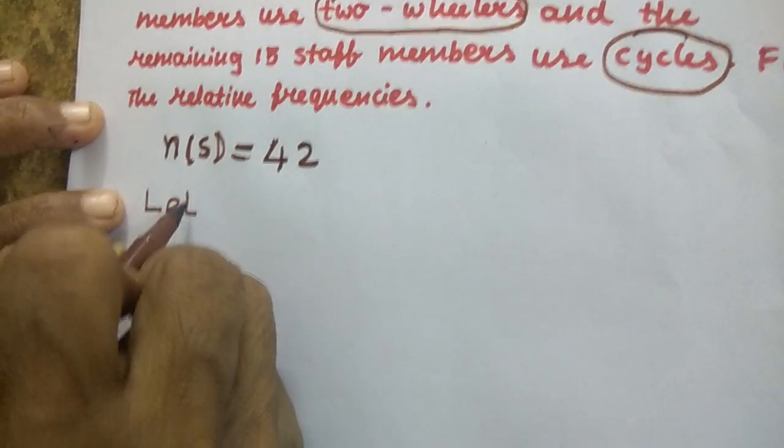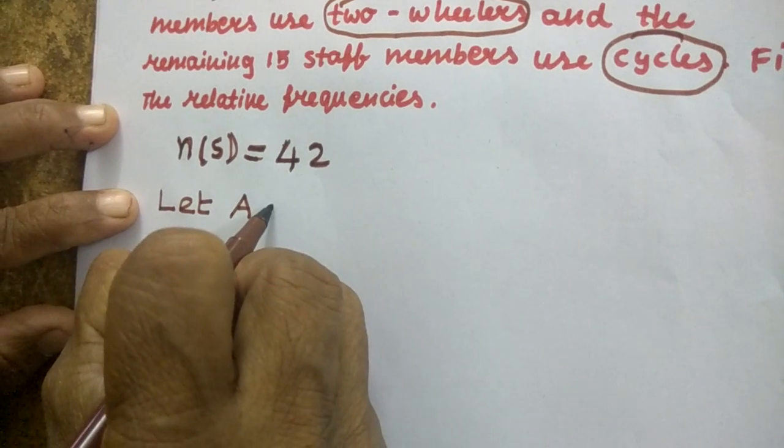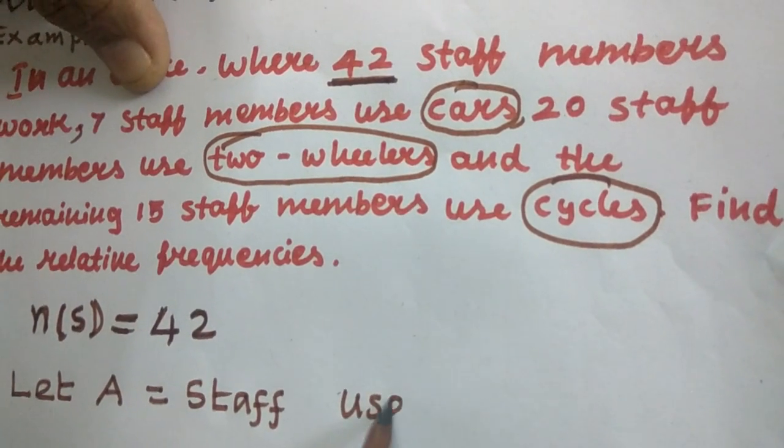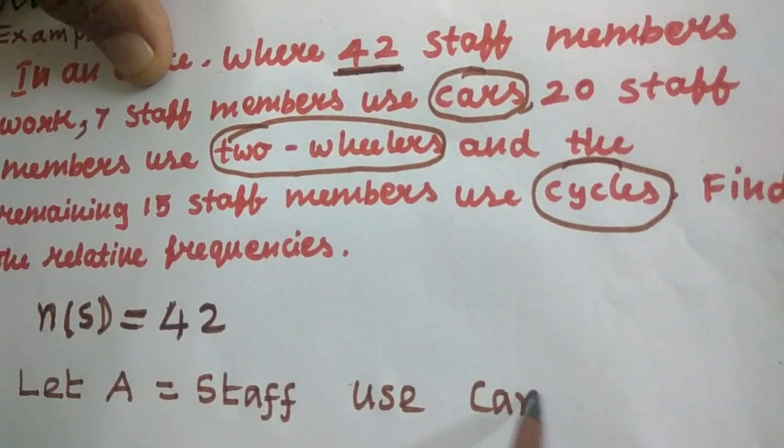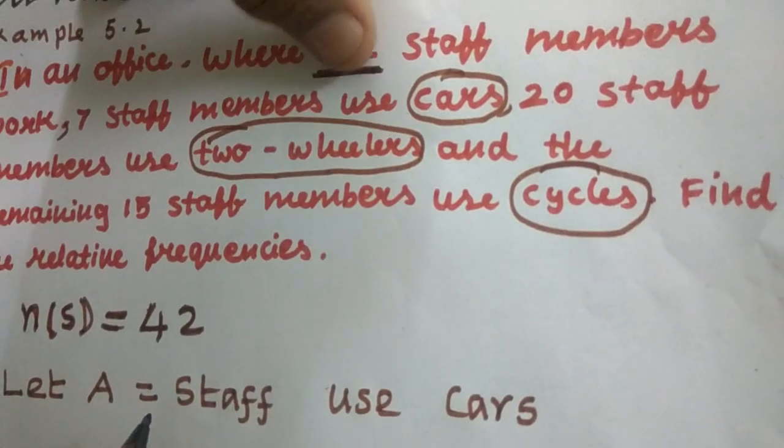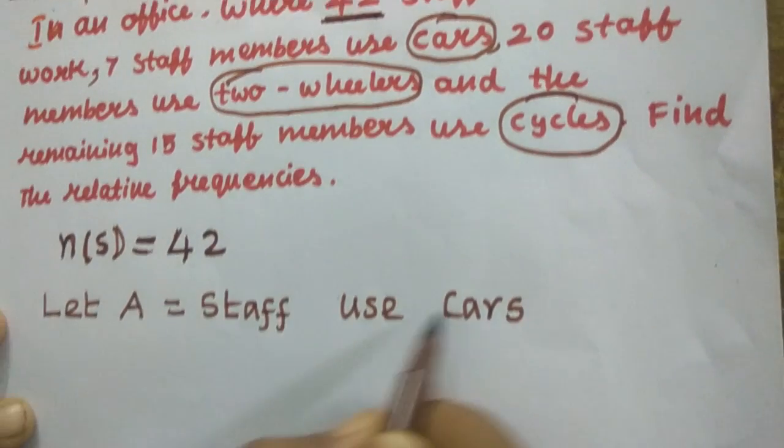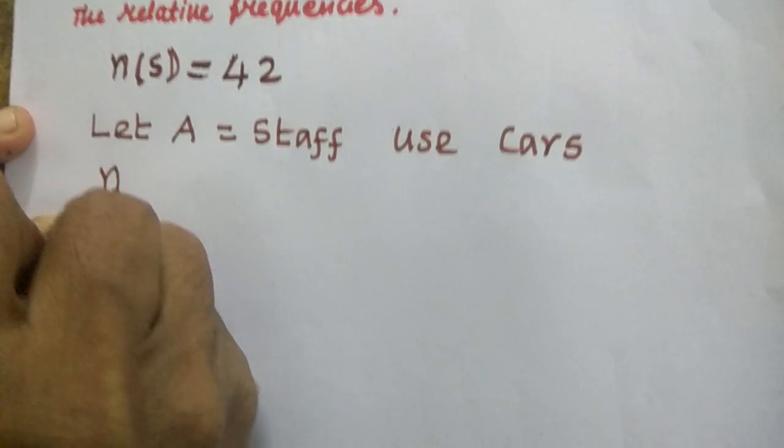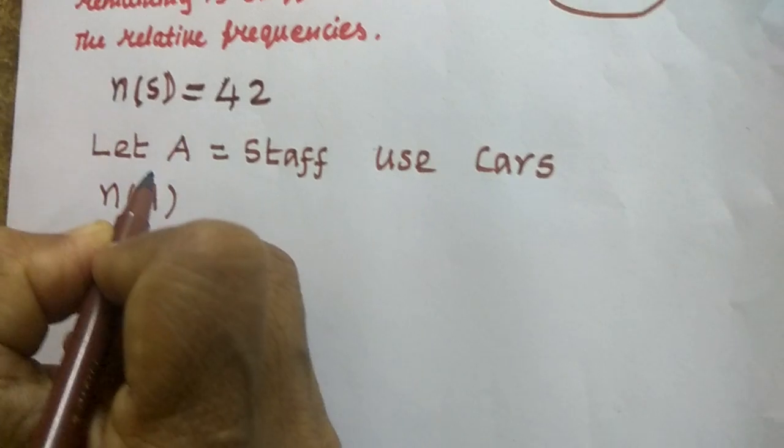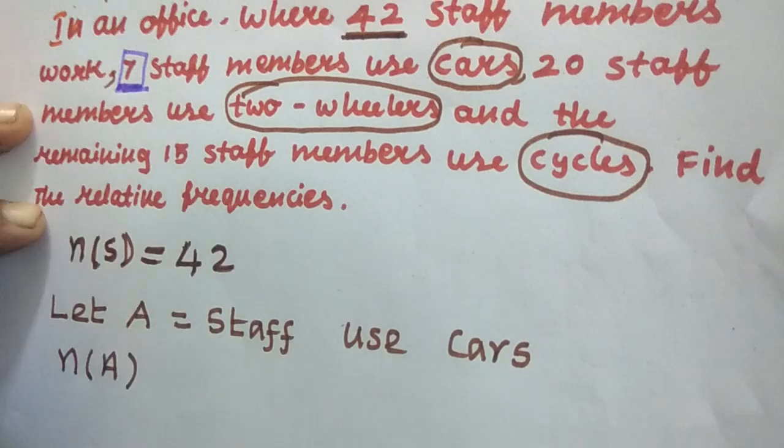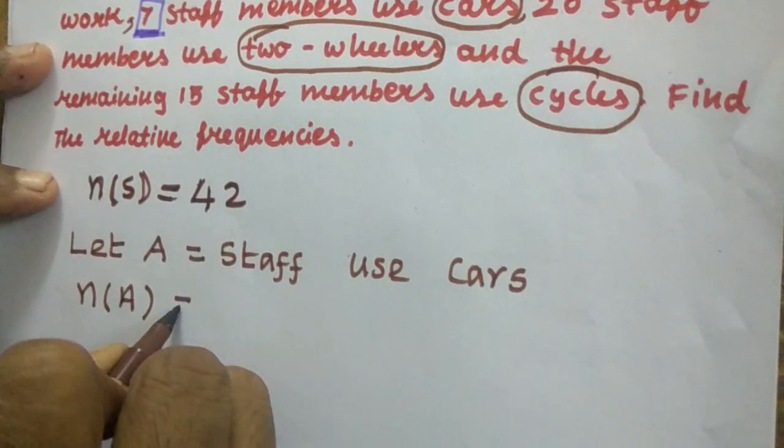Let A equal to staff use cars. Let A be the event of getting staff members using cars. So N of A equal to what is N of A? 7. So N of A equal to 7.